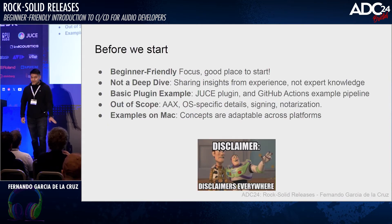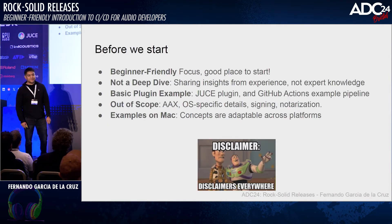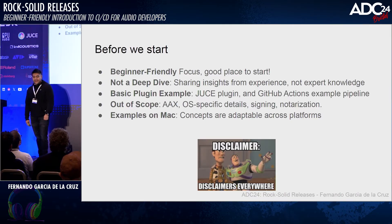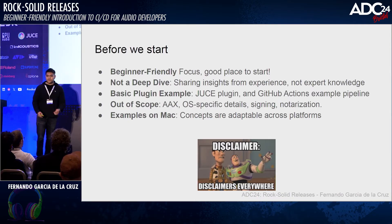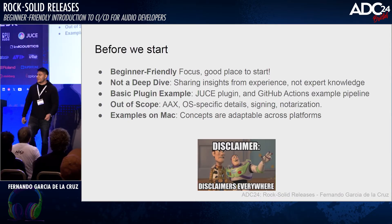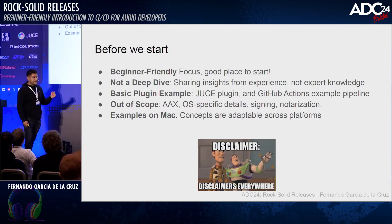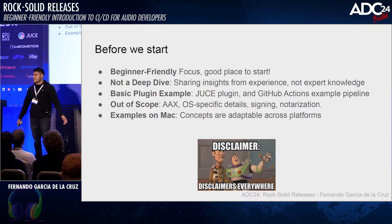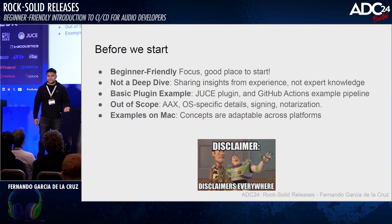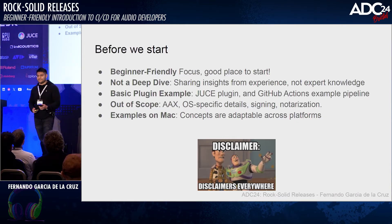A few things to mention before we start: this is going to be a beginner-friendly approach. If you don't know anything about continuous delivery and integration with GitHub Actions, for example, this could be a good place to start. This is not a deep dive because most of this knowledge is based on experience. We will present a base case with a JUCE plugin and how we can make a GitHub Actions pipeline work.